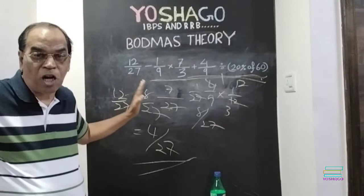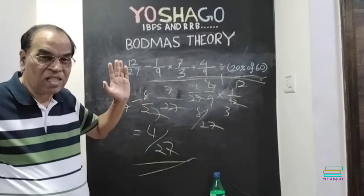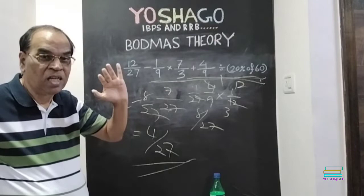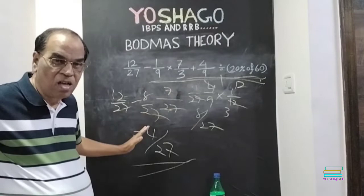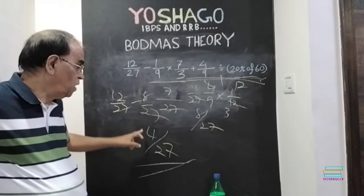4 by 27. This is the BODMAS. This is the BODMAS containing all signs. Bracket, of, division, multiplication, addition, subtraction. Containing all these signs. We have come to this BODMAS problem. And answer here is 4 by 27. So, BODMAS theory is, I think you have understood what it is.